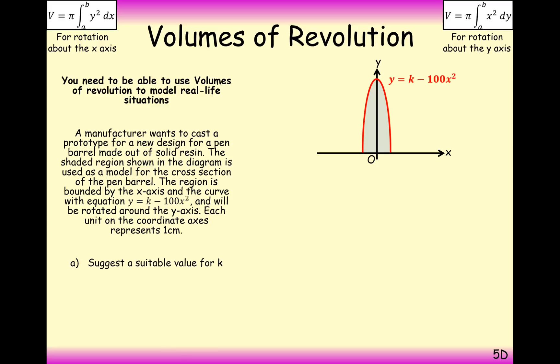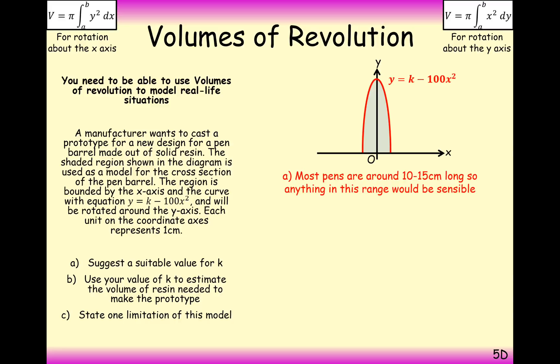Okay so the questions that we're going to face are suggest a suitable value for k. Okay well to answer that well first of all we need to consider the real life context of this. We're looking to design a pen here. Most pens are in between 10 to 15 centimeters long. The value for k is going to be at this point here where the x coordinate has no value. So it's effectively how high is your pen going to be at the end. So anything between 10 and 15 centimeters here is going to be a reasonable approximate value.